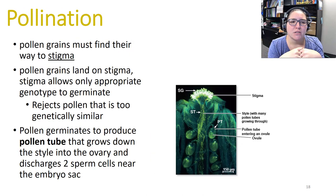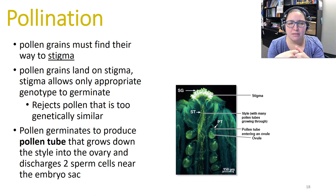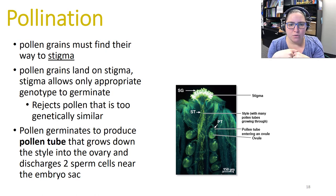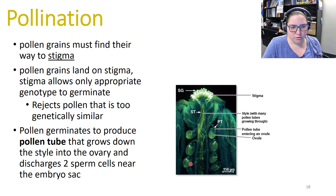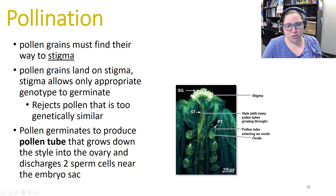Pollination occurs when pollen makes its way to a compatible stigma. The pollen grains land on the stigma; the stigma allows appropriate pollen genotypes to germinate and rejects pollen that is too genetically similar. If it can germinate, the pollen tube grows down through the style to the ovary and ovule, and then the pollen discharges two sperm near the embryo sac.